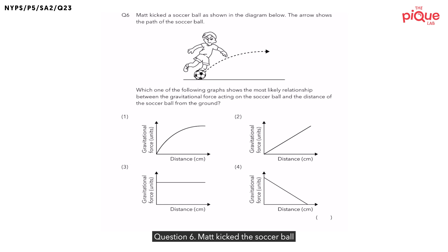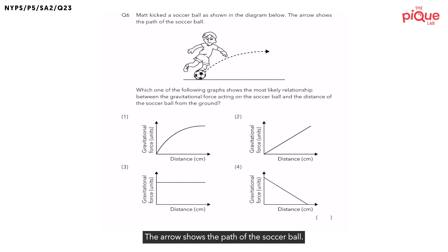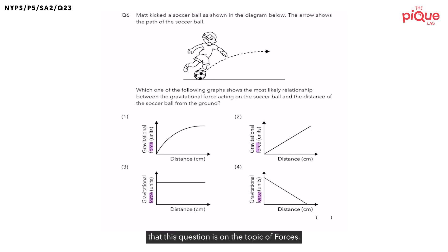Question 6. Matt kicked the soccer ball as shown in the diagram below. The arrow shows the path of the soccer ball. I want you to scan the question and tell me which topic this question is from. From the graph and the options, we can see that this question is on the topic of forces.